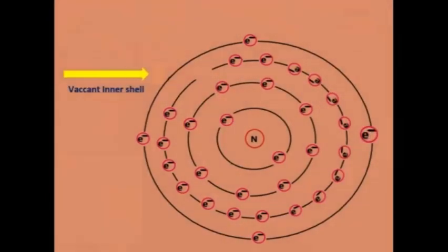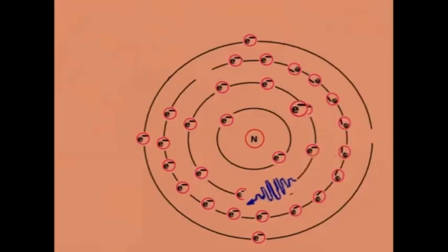What happens when an atom is left with a vacant inner shell due to Compton effect? Energy equivalent to the difference between outer shell and inner shell energy states is released as electromagnetic energy, a photon also called characteristic X-ray.